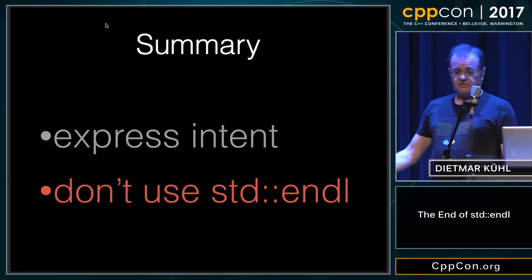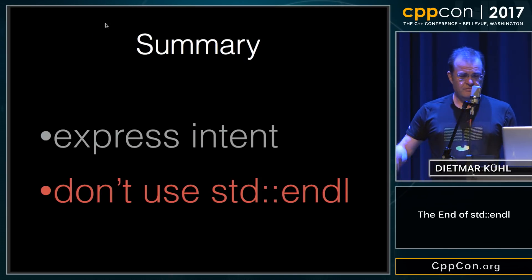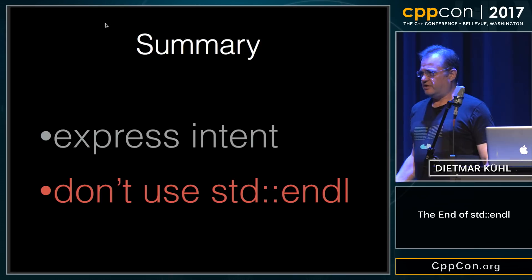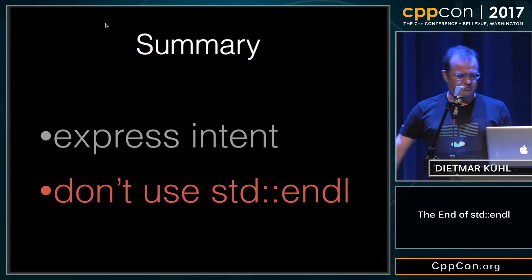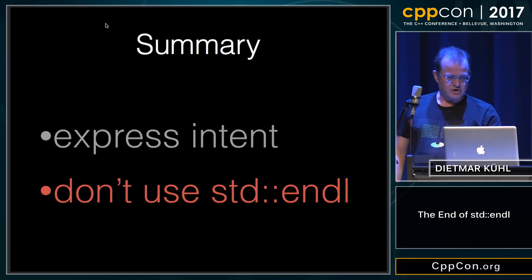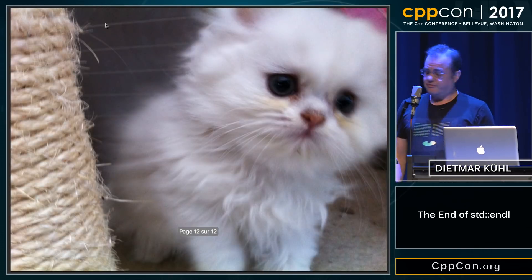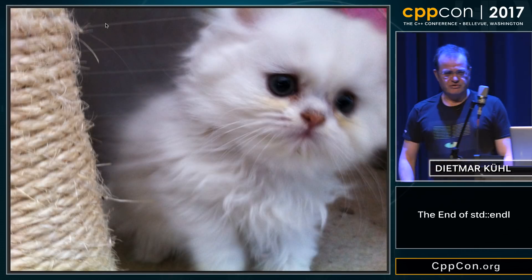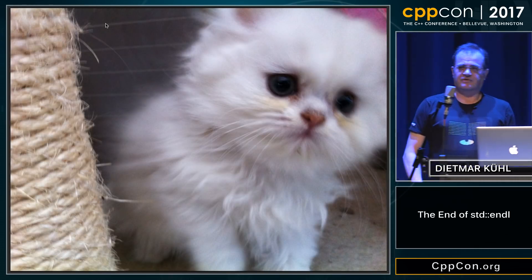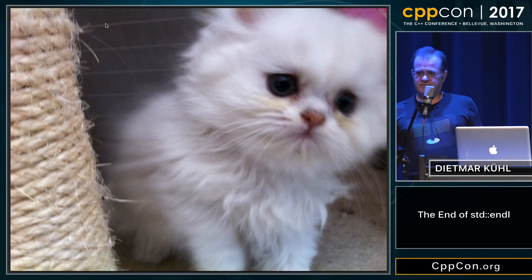So in summary: express intent and don't use endl — it makes your program slow. And just to round things off, a picture of a cat. Thank you very much.